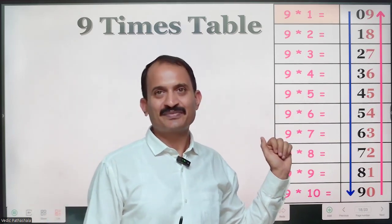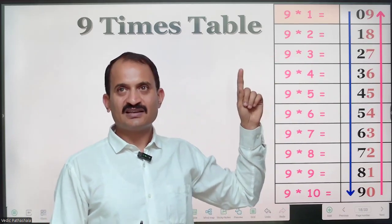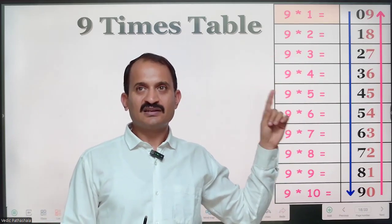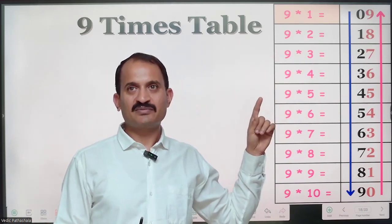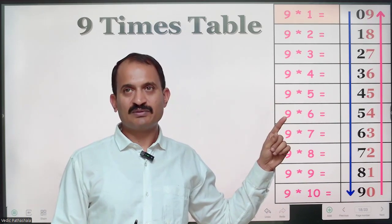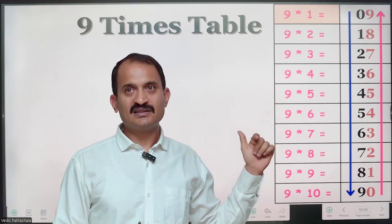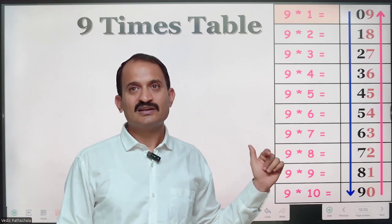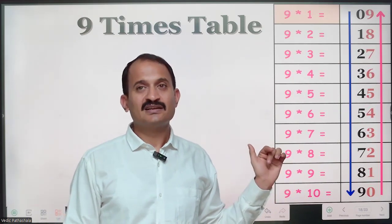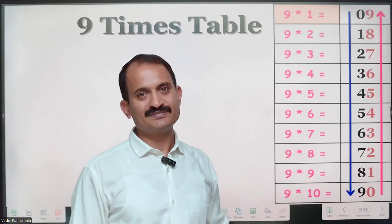Very easy! See: 9 ones are 9, 9 twos are 18, 9 threes are 27, 9 fours are 36, 9 fives are 45, 9 sixes are 54, 9 sevens are 63, 9 eights are 72, 9 nines are 81, and 9 tens are 90.